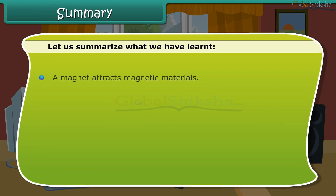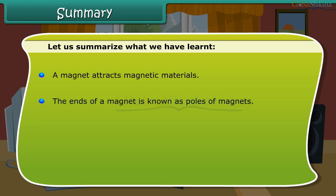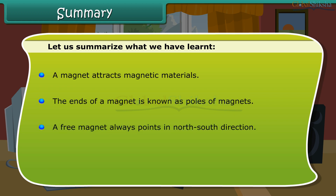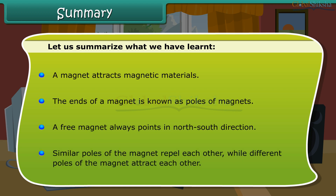Summary: A magnet attracts magnetic materials. The ends of a magnet are known as the poles. A free magnet always points in the north-south direction. Similar poles of magnets repel each other, while different poles attract each other.